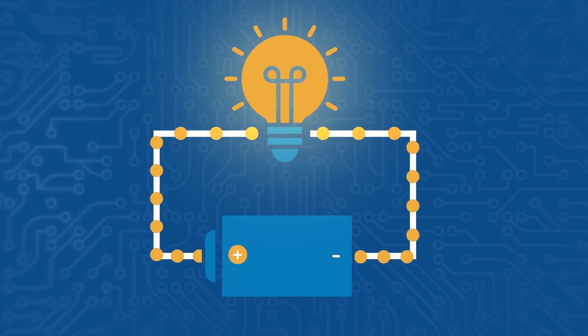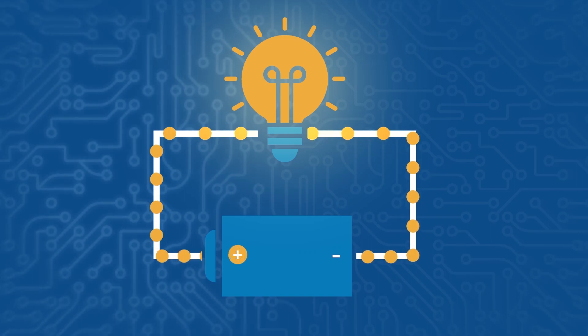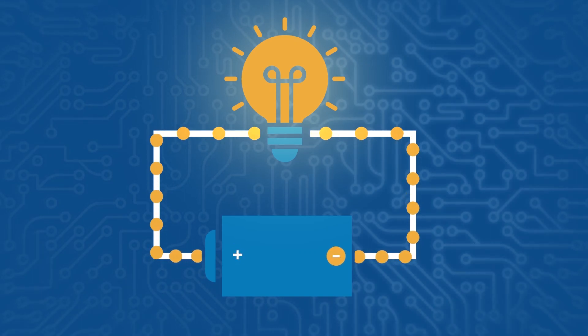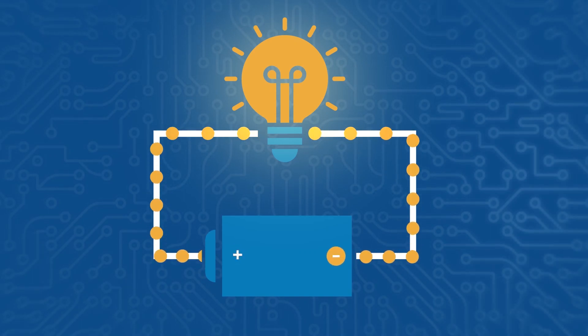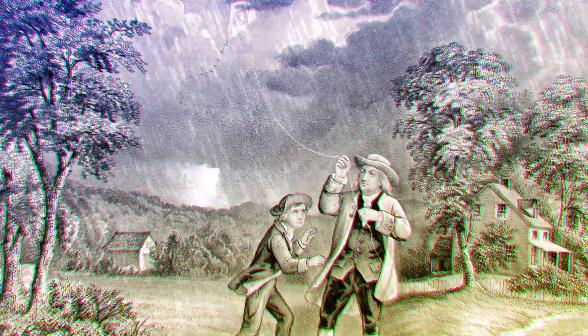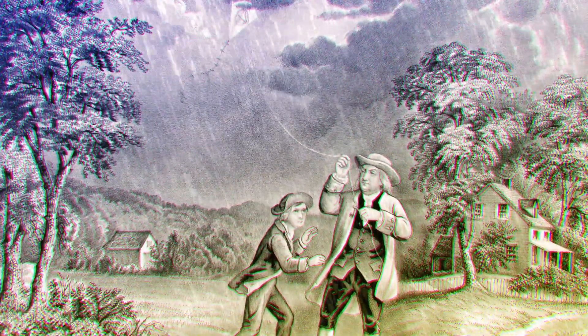In a circuit diagram, we show an electric current flowing from the positive side of a battery, or a power supply, to the negative side, and it's been that way since Benjamin Franklin attached a key to a kite string and flew into some really bad weather. Fun fact, this is actually kind of backwards, and it's known as conventional current theory.